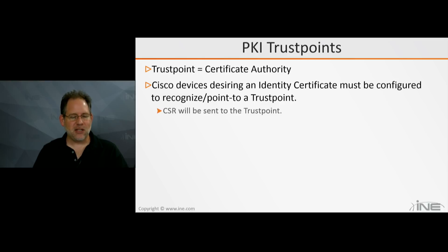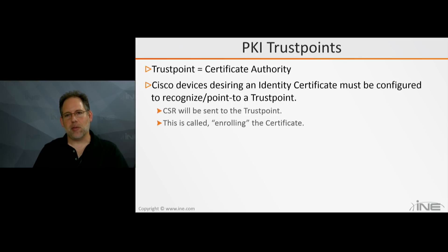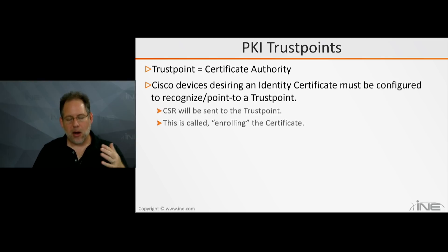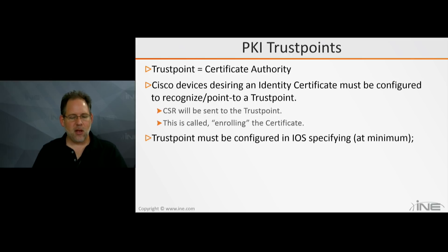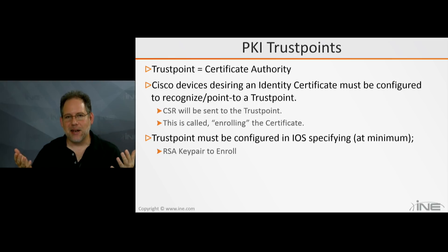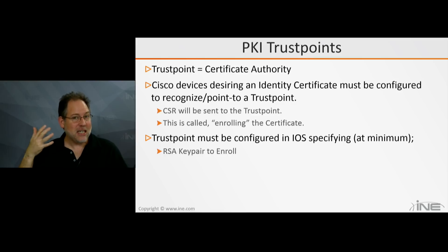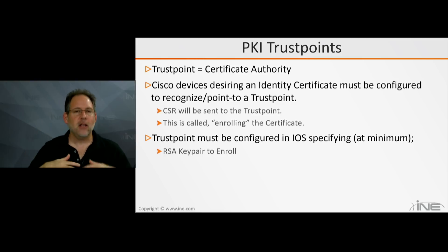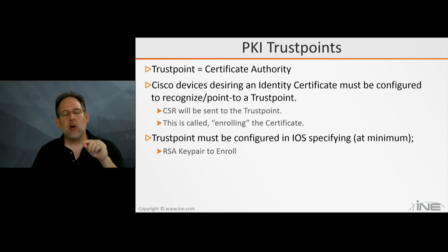The certificate signing request will be sent, and that is called enrolling the certificate. The process of enrolling can either be done manually — I'll show you a command that kickstarts the enrolling process — or if you use the auto-enroll command, that will automatically enroll with the CA. To configure the trust point within IOS at minimum, I need to specify the RSA key pair to enroll. Ideally you give the key pair a name that's easy to memorize, like 'Bob key' or 'Cisco key', because when you configure your trust point you'll be pointing to that key pair.